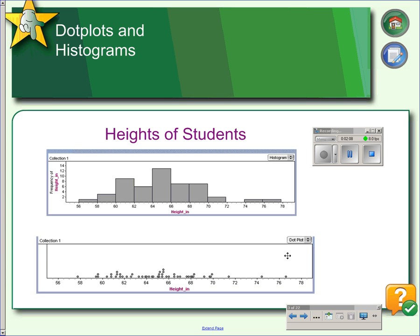If we were to take this dot plot and turn it into a histogram, we can choose to make our bin widths 2 inches wide. So we just mark every 2 inches across here, and you notice on this mark, this last one I made, 64 is right on the line.